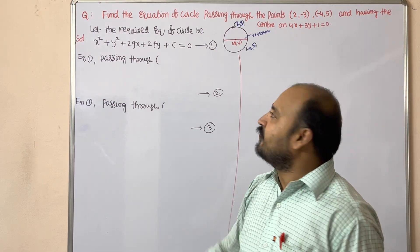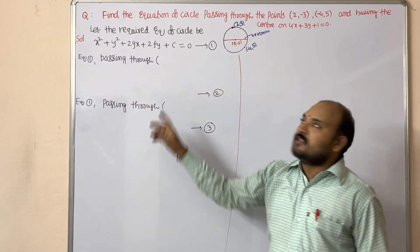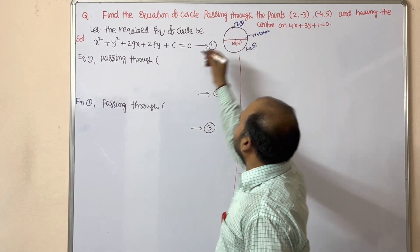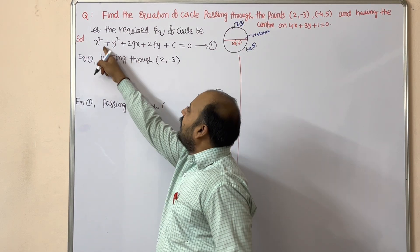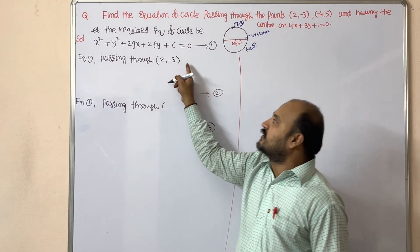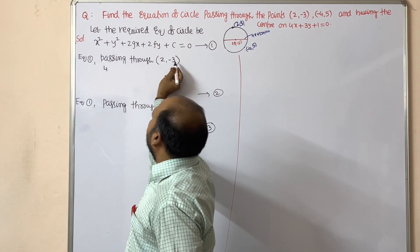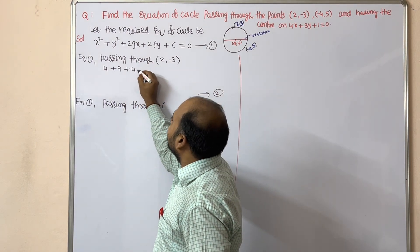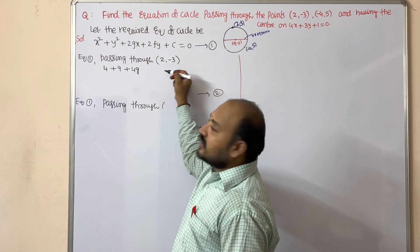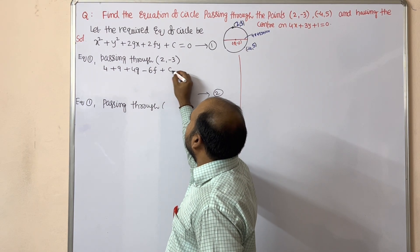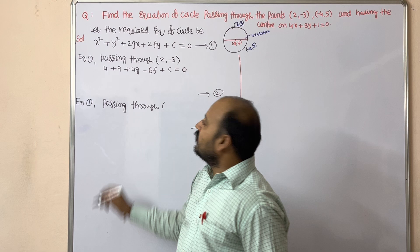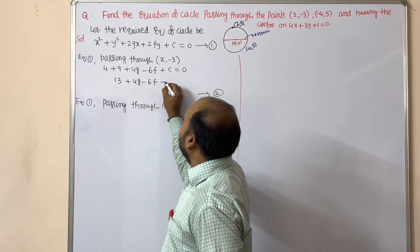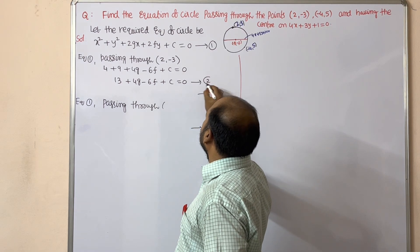Let the required equation of the circle be the general equation of a circle. This circle passes through the first point (2, -3), so substituting x = 2, y = -3: 2² + (-3)² + 2g(2) + 2f(-3) + c = 0, giving 4 + 9 + 4g - 6f + c = 0, so 13 + 4g - 6f + c = 0. Keep this as equation 2.